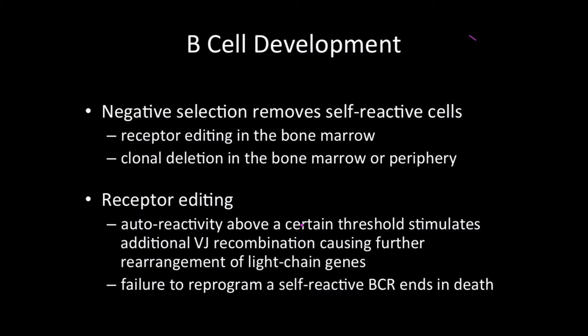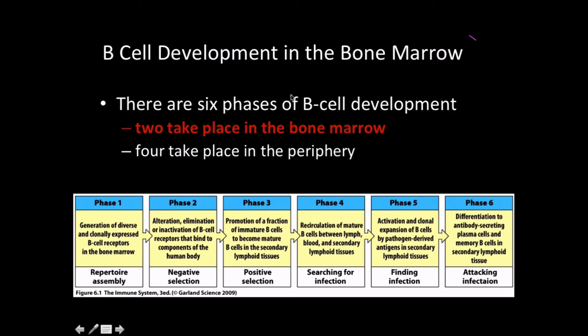In the case of B cell development, receptor editing is a bit more limited than with T cells. But if none of it works, the B cells are going to end up being killed, because we can't let a dangerous criminal walk the streets. Development in the bone marrow covers phases one and two, while phases three, four, five, and six are all happening in the secondary lymphoid tissues — basically the lymph nodes.